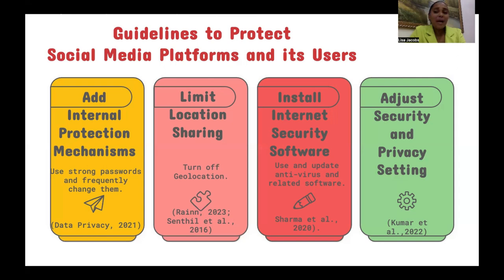Second, limit location sharing, because social media users can become more vulnerable to actual crimes like robbery when they share their location online. Third, install internet security software, such as antivirus, and remember to update them frequently. Also, the disclosure of information can be protected via encryption of data.